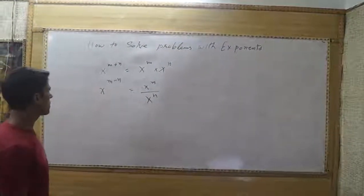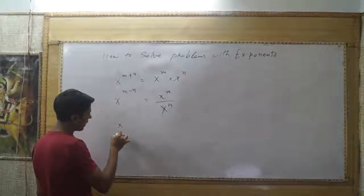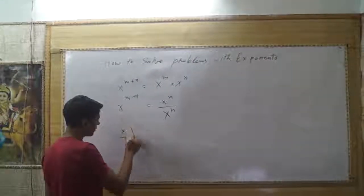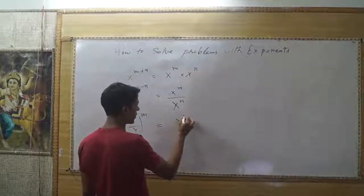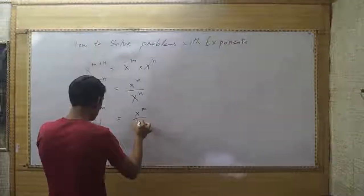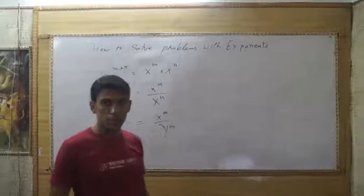Like this, you can see it. You can also see x times y, to the power m. You can show it as x to the m times y to the m. Okay? Thank you very much.